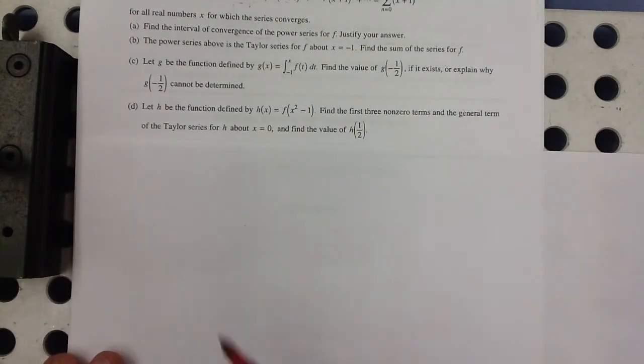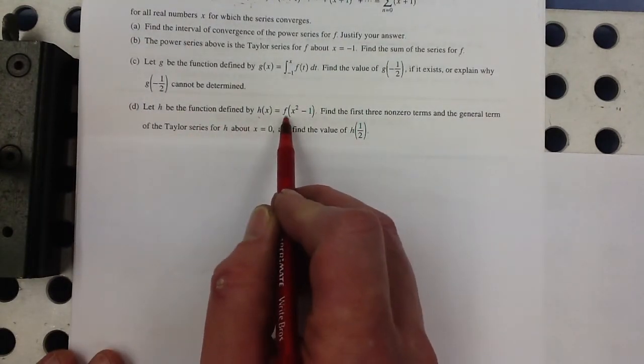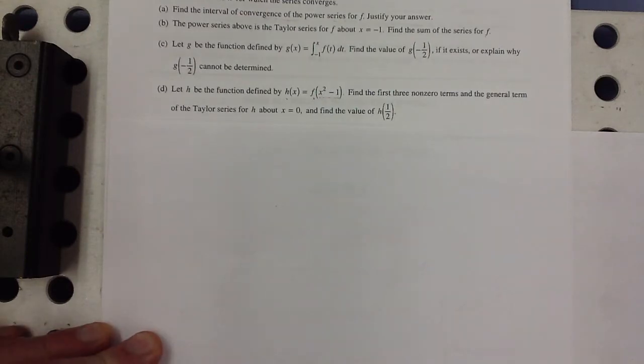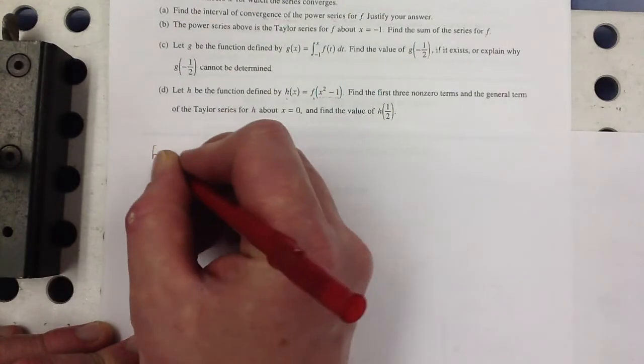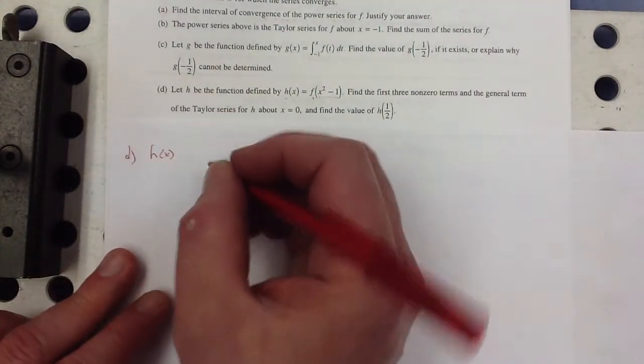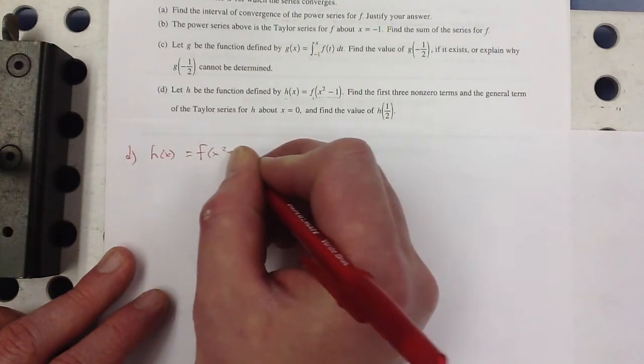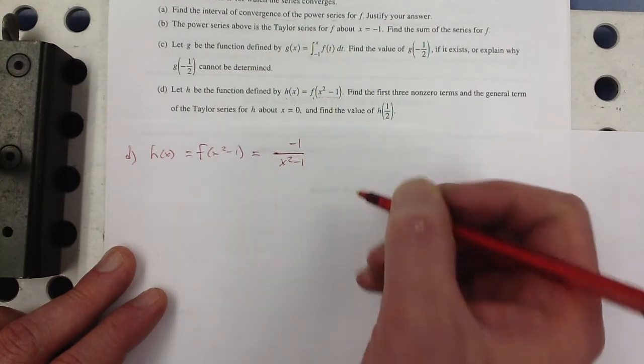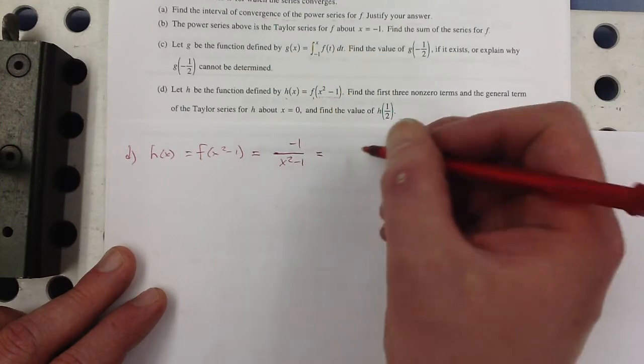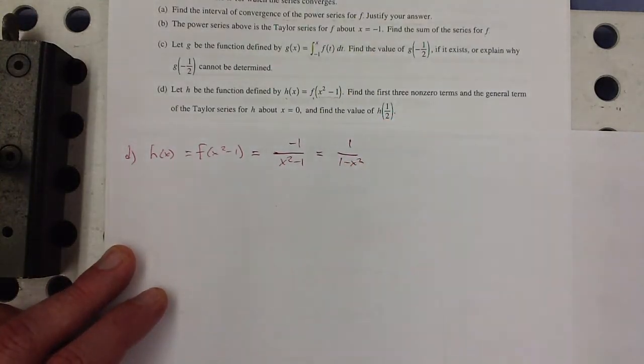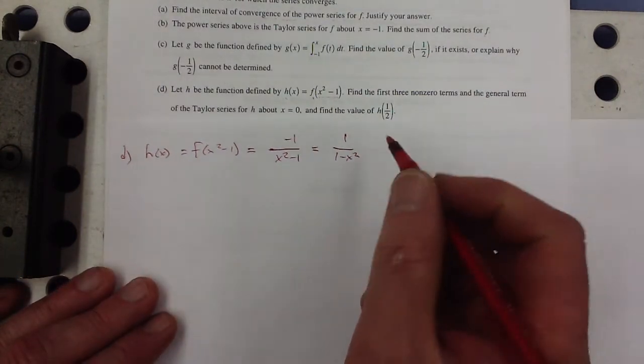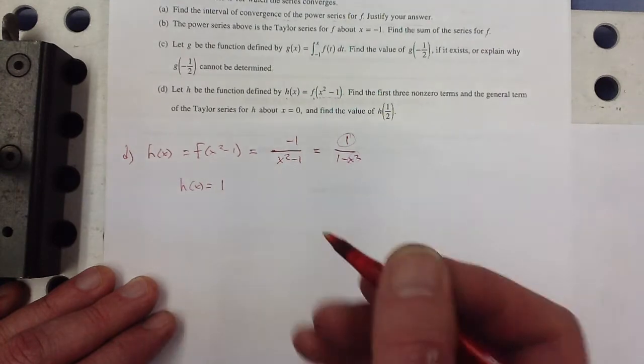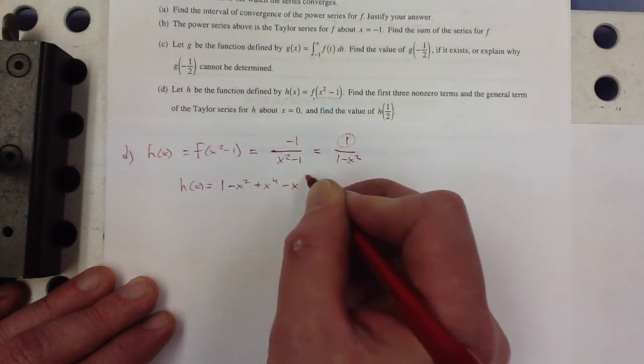So let's try part D. Let h be the function defined by h of x is equal to f of x squared minus 1. Find the first three non-zero terms in the general term of the series and find the value of h of 1 half. Well, now we know what the f function is. Again, there's more than one way to do this, but the best way is going to be now that we know that the f function is negative 1 over x, that means this is negative 1 over x squared minus 1. Or in other words, flipping the negative signs, multiplying the top and bottom by negative 1. That's the same as that. And that is just a geometric series with a first term of 1 and a multiplier of x squared. So h of x would be equal to 1 minus x squared plus x to the 4th minus x to the 6th.